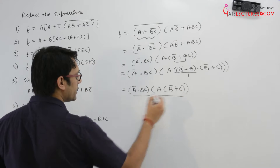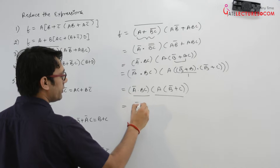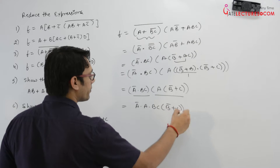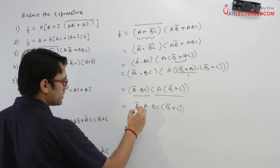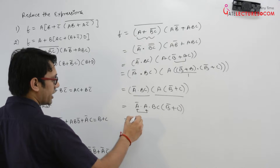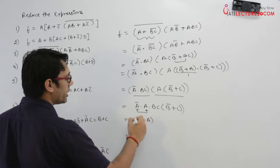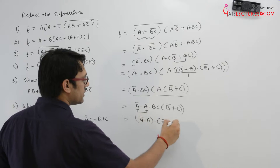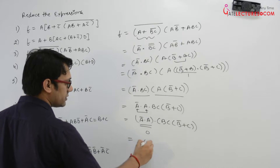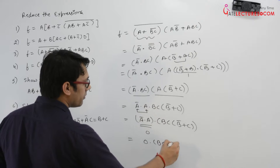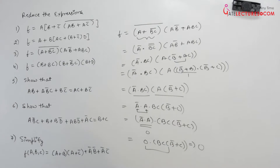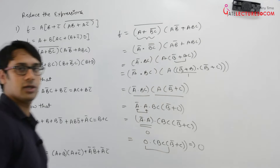Now you can open these brackets, so it can be written as a'·a·bc·(b' + c). Here we have a'·a which equals 0, so it is 0·bc·(b' + c), which makes the whole expression equal to 0. So this complete expression can be minimized to 0 in this case.